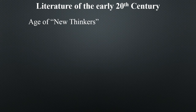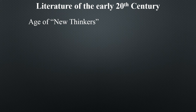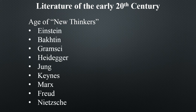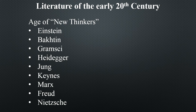The 20th century is an age of new thinkers — big names in many different fields of thought and study that start to change the game and make us think profoundly differently in terms of culture. Some key figures include Einstein, Bakhtin, Gramsci, Heidegger, Jung, Keynes, Marx, Freud, and Nietzsche. These are philosophers, physicists, psychologists, and social theorists. Marx and Keynes, for example, are economists re-understanding how economies work. All of them are coming up with very profound ideas that then influence how society moves forward or what society tries to do.